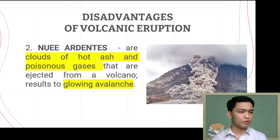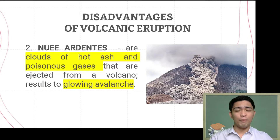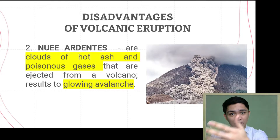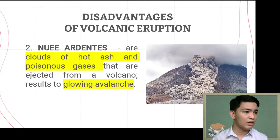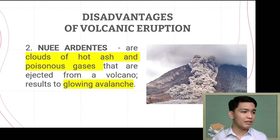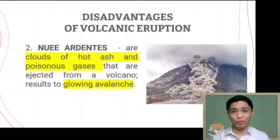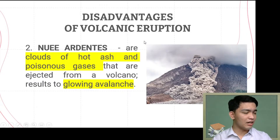That's why Nuée Ardente is also referred to as a glowing avalanche. If you're familiar with avalanche — which occurs in places covered with snow on mountains — when it flows rapidly downward, that's called an avalanche. In this case, it's not snow flowing rapidly downward, but rather a cloud of hot ash and poisonous gases. Whatever this hot gas and ash passes through will be suffocated and burned, resulting in damage to the surroundings near the volcano.